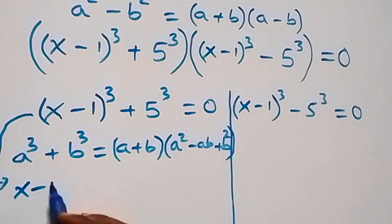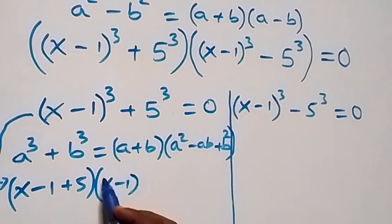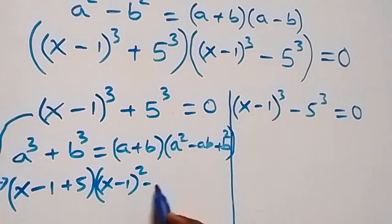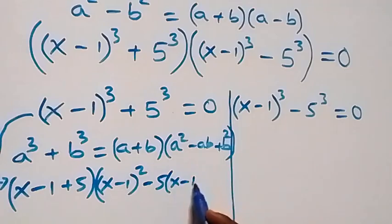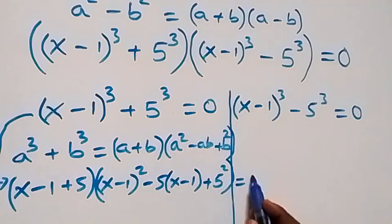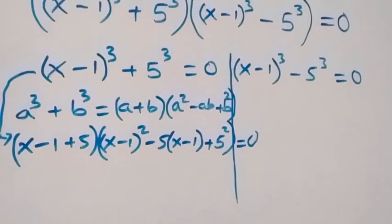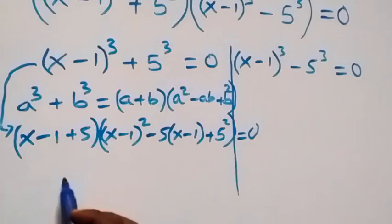So what we have becomes: x minus 1 plus 5, into bracket x minus 1 squared, minus 5 times x minus 1, plus 5 squared, close bracket, equals to 0. Simplifying, minus 1 plus 5 gives 4, so we have x plus 4.